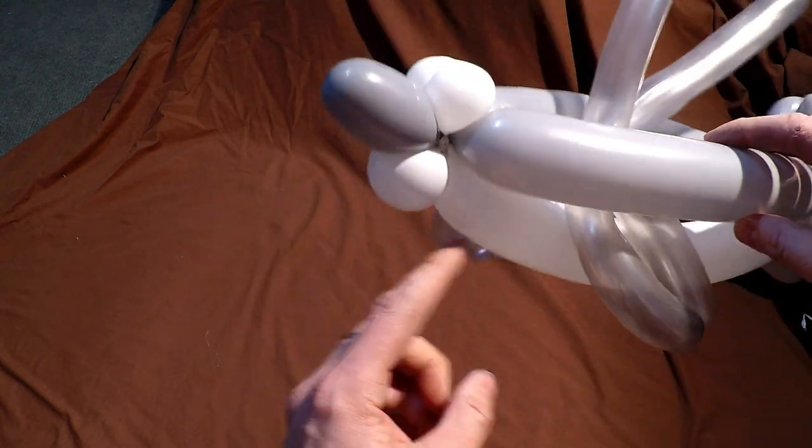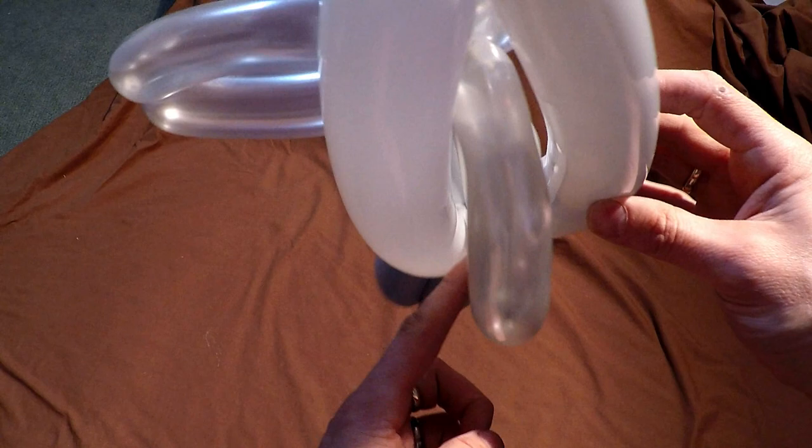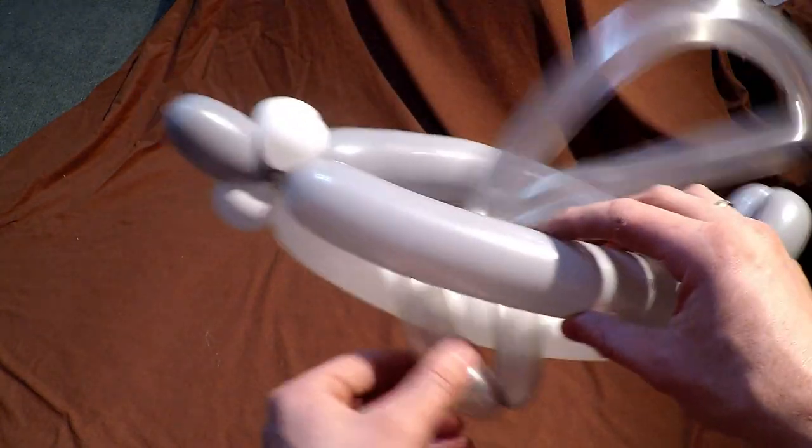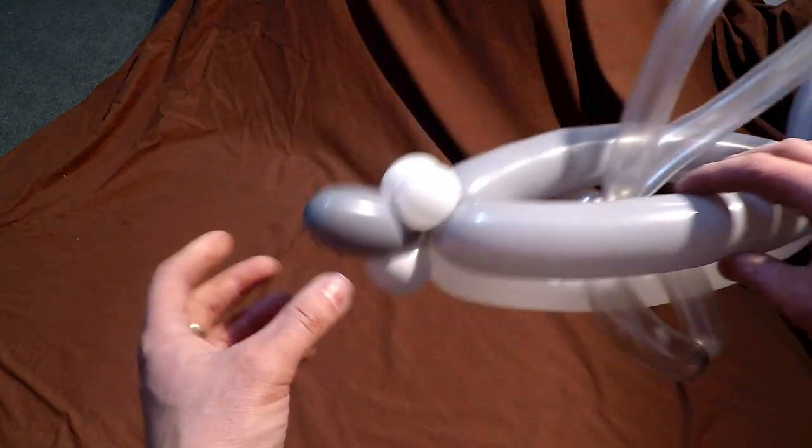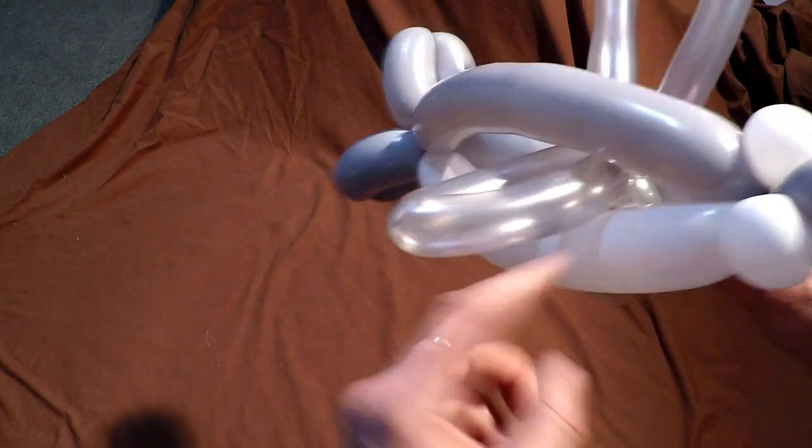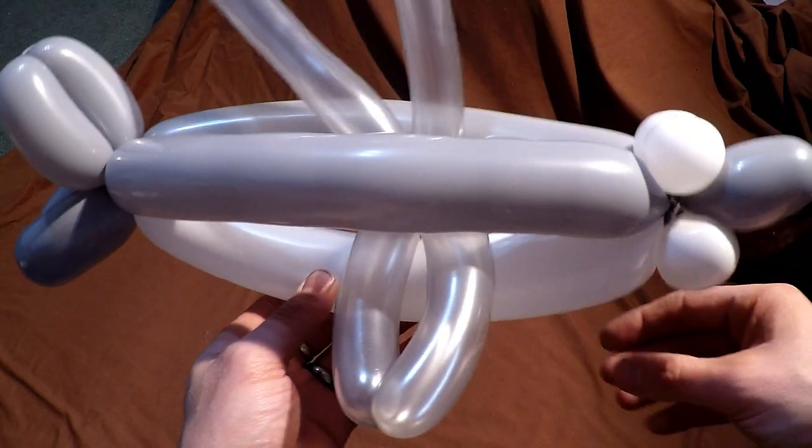And you can see that if I had put another white one down along here, it would make it a little tighter. So this wouldn't be moving so much. So that's a little tip right there to maybe just make the body out of two balloons.